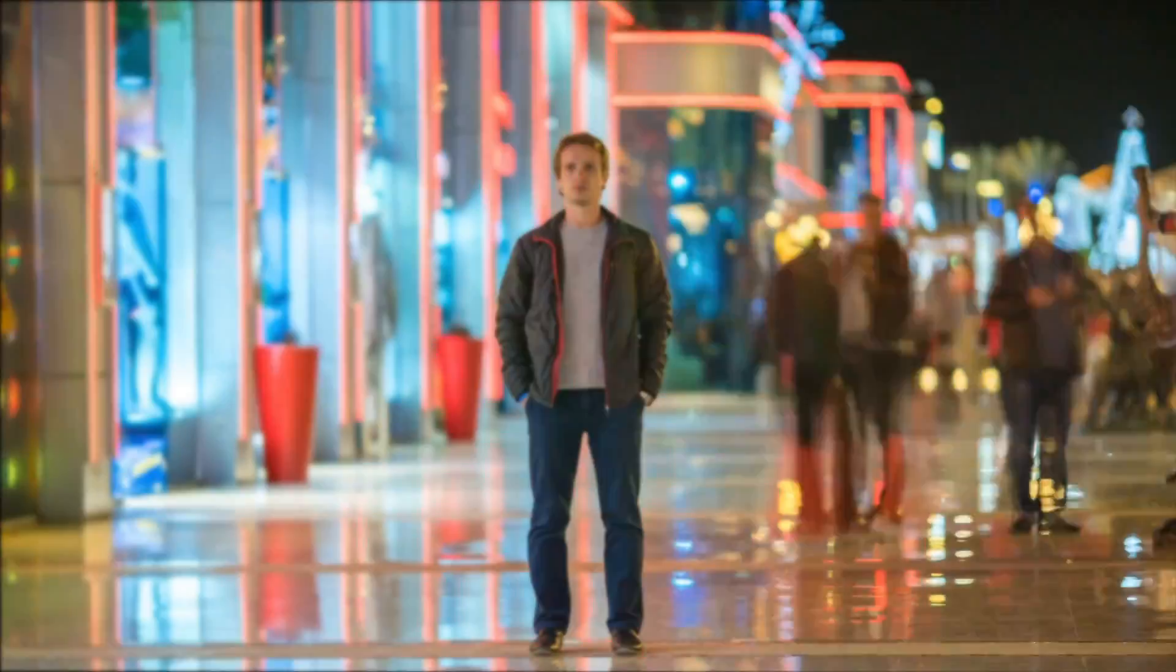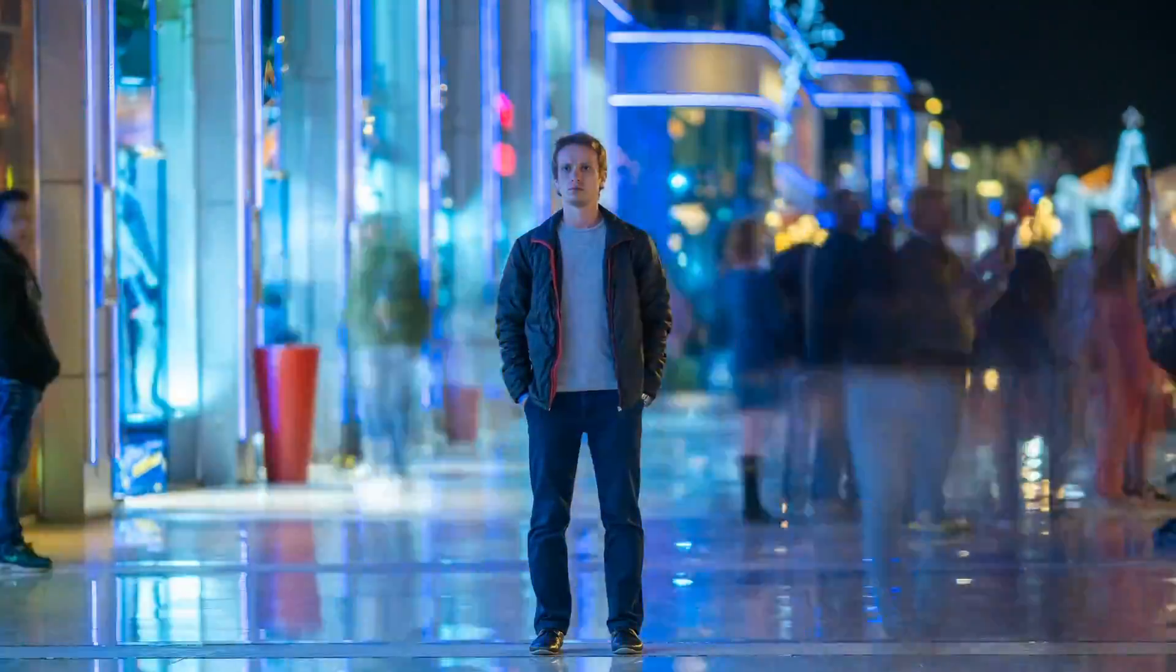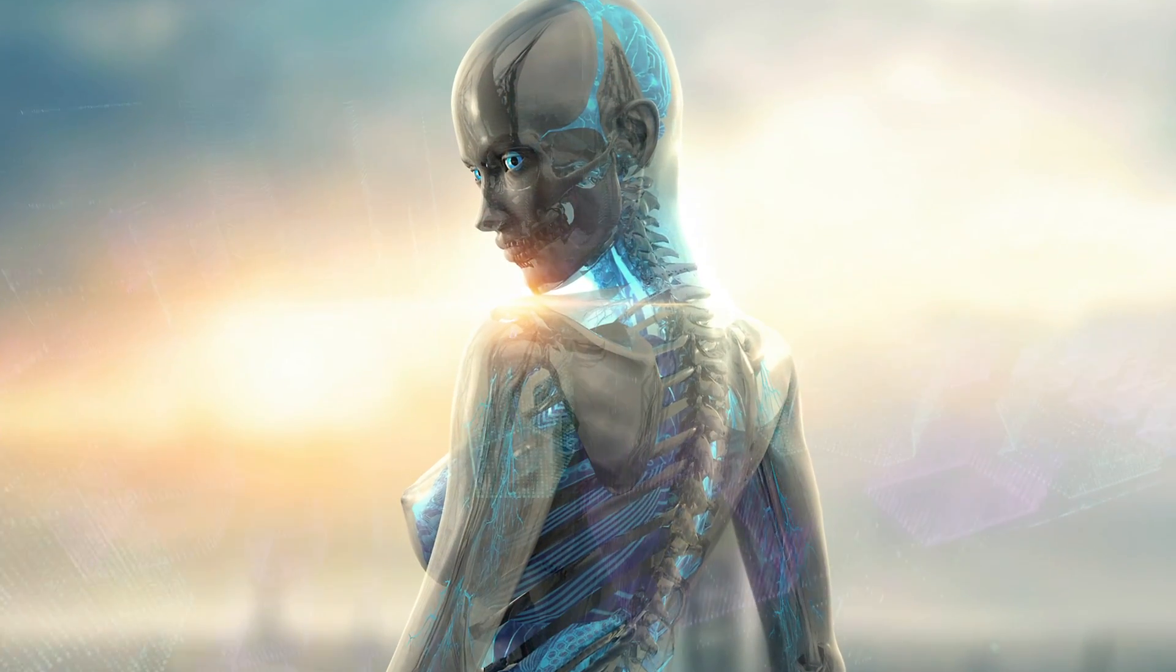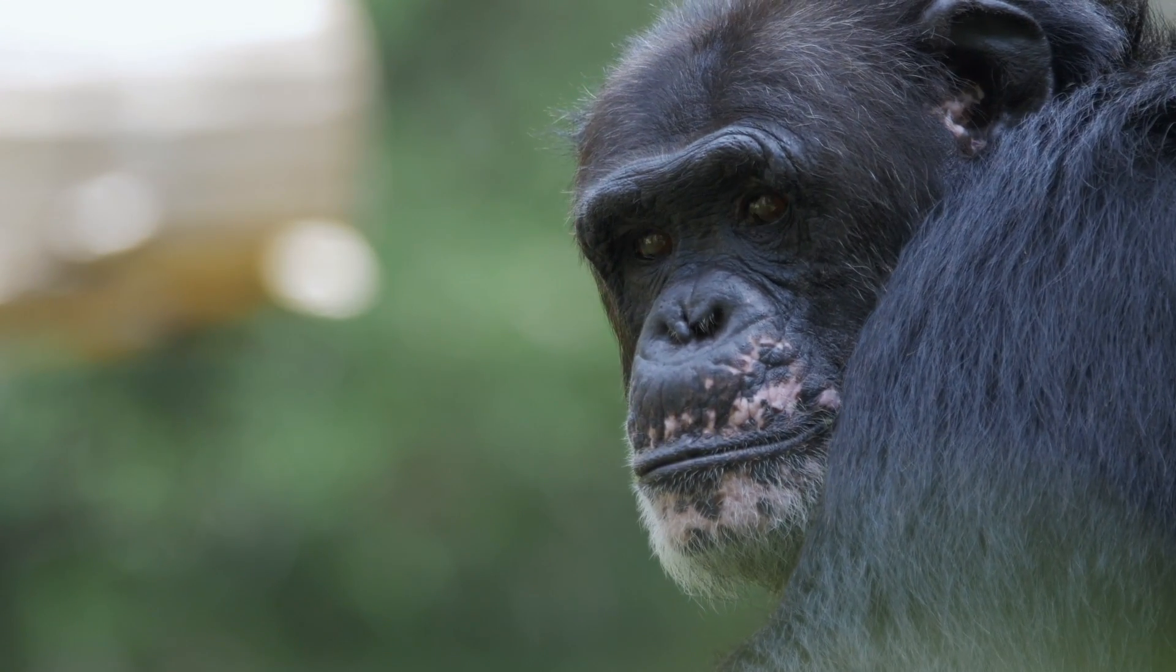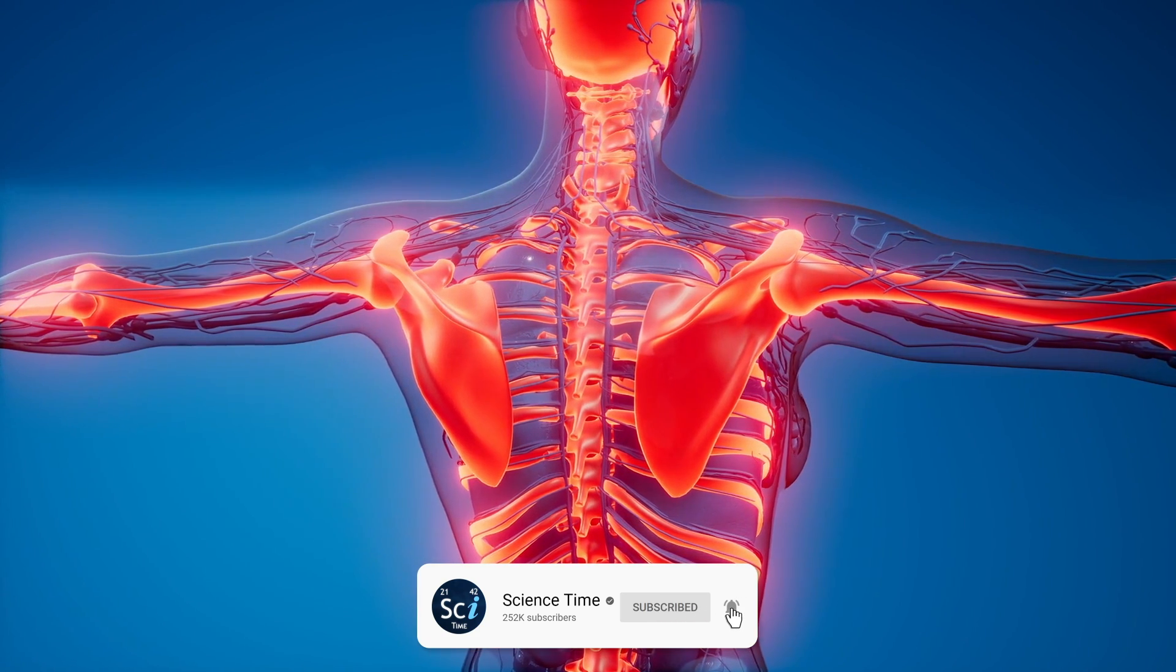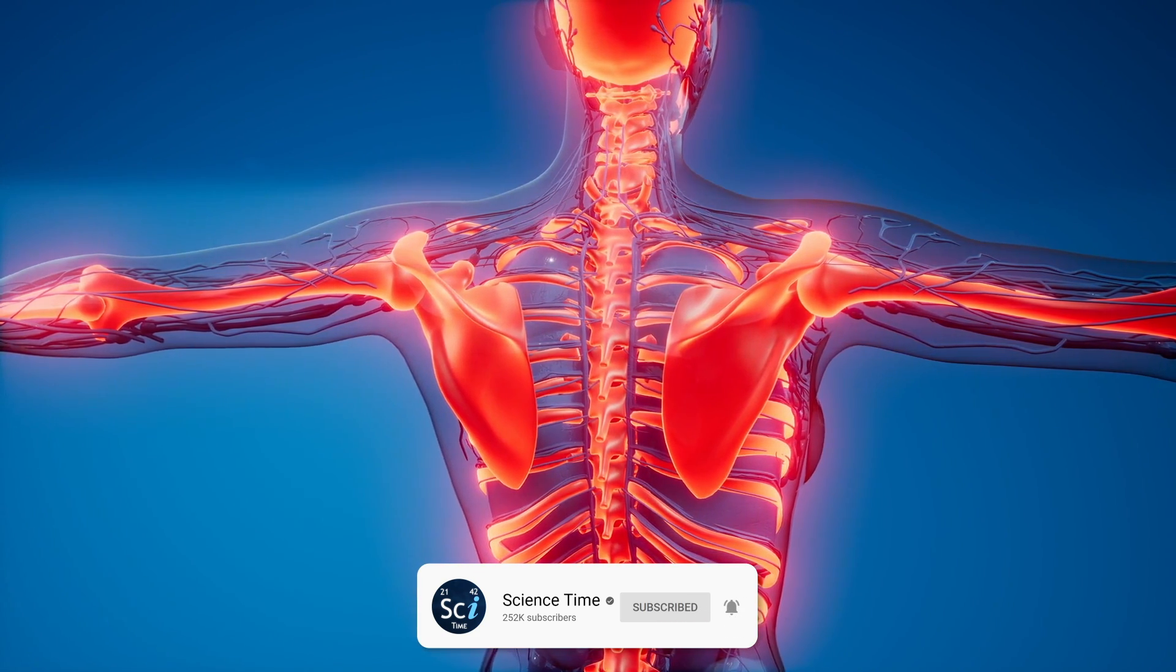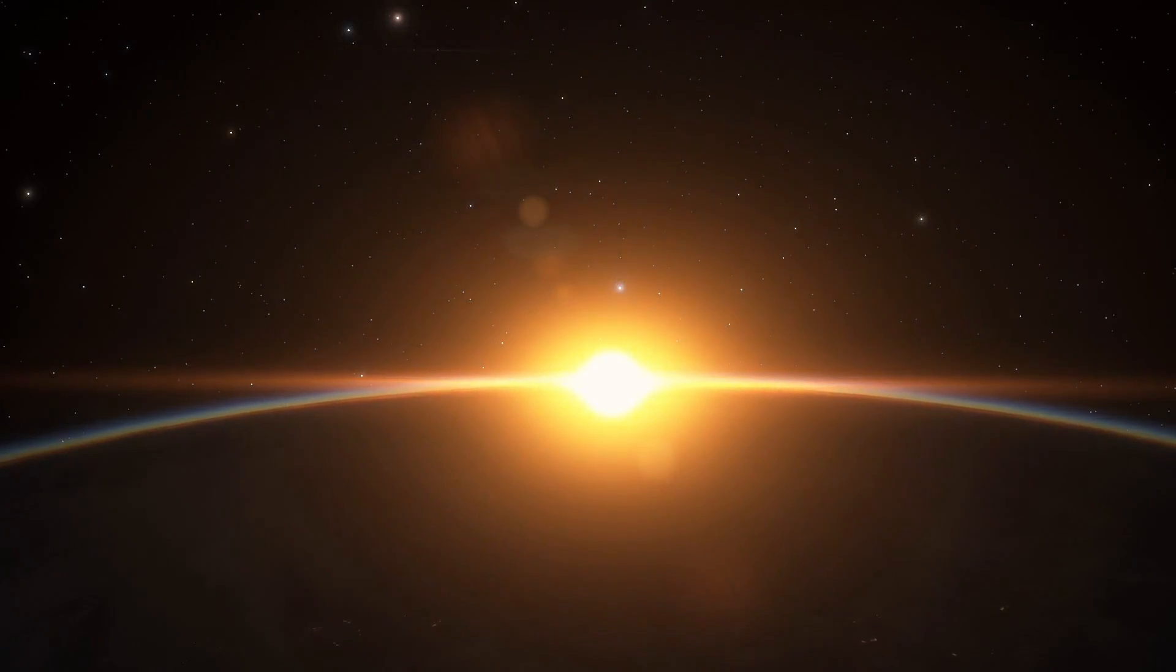We are probably one of the last generations of homo sapiens. Within a century or two, Earth will be dominated by entities that are more different from us than we are different from Neanderthals or from chimpanzees, because in the coming generations we will learn how to engineer bodies and brains and minds. Now how exactly will the future masters of the planet look like?